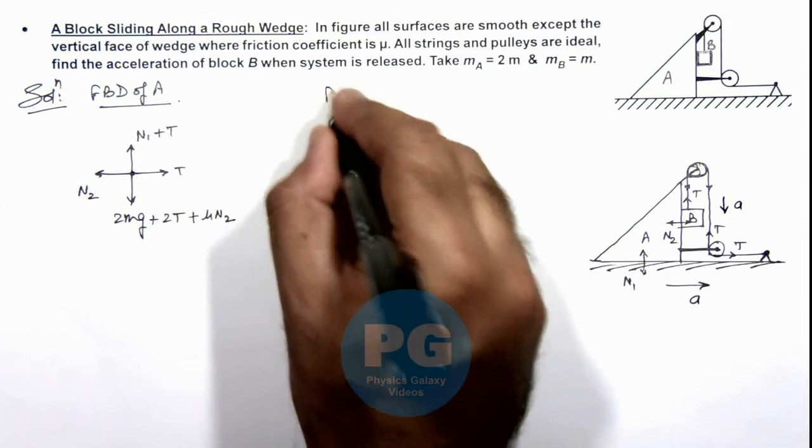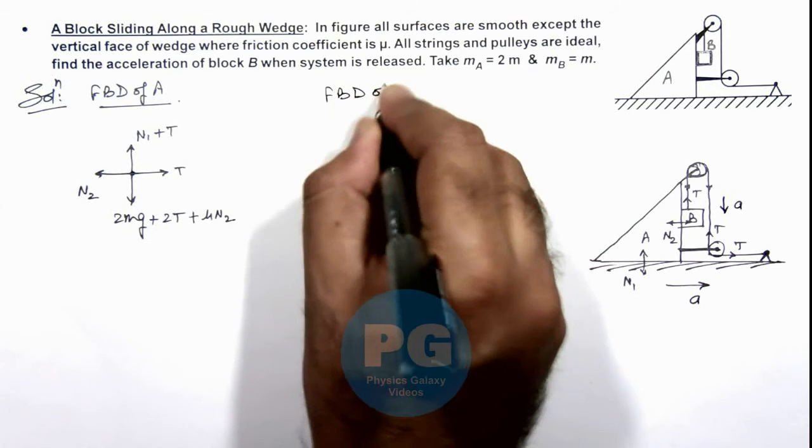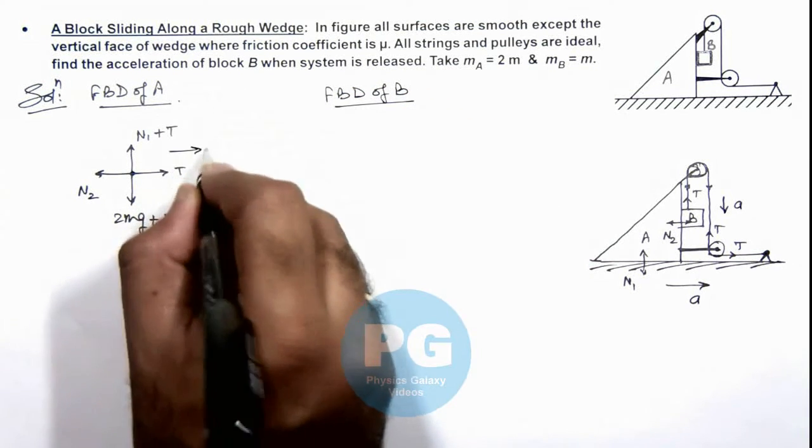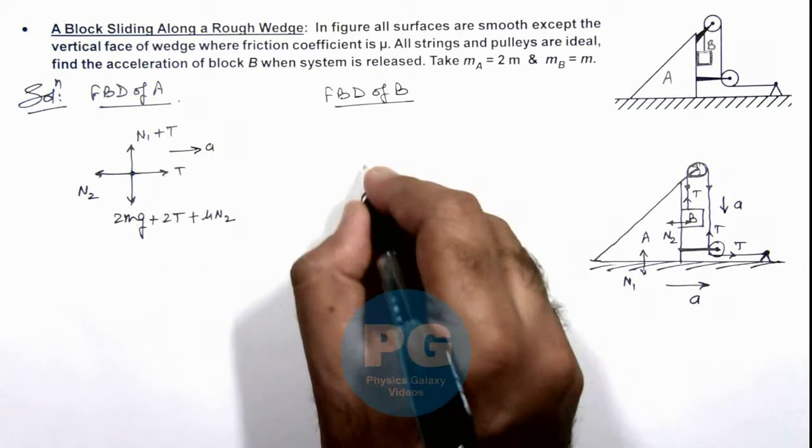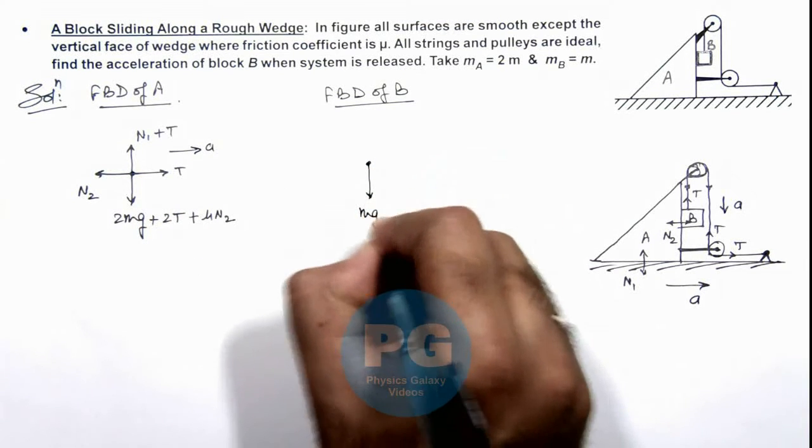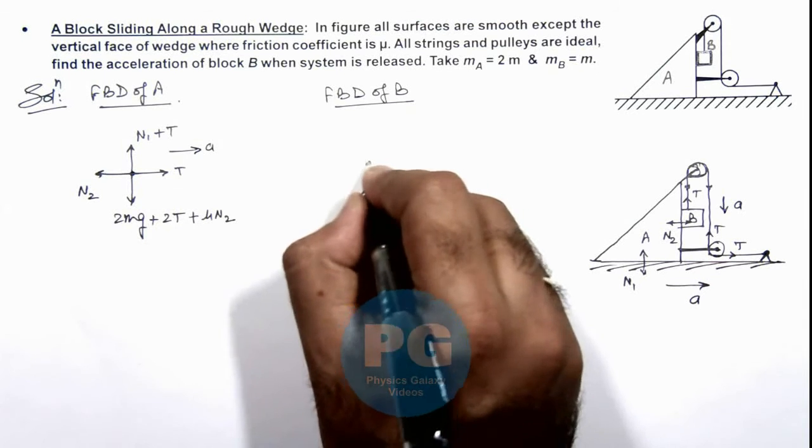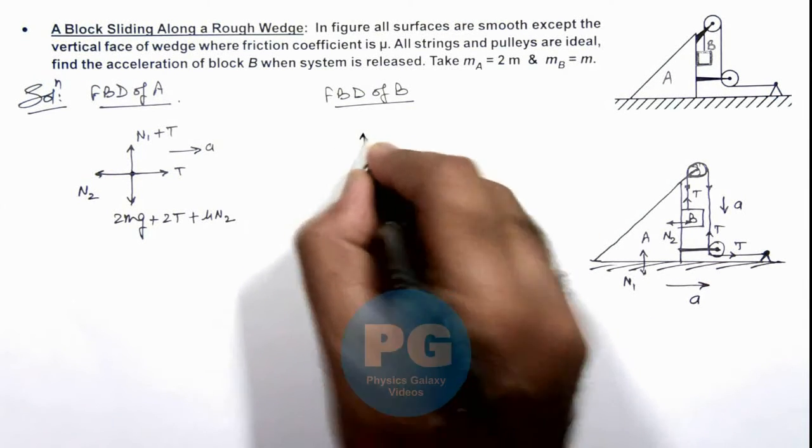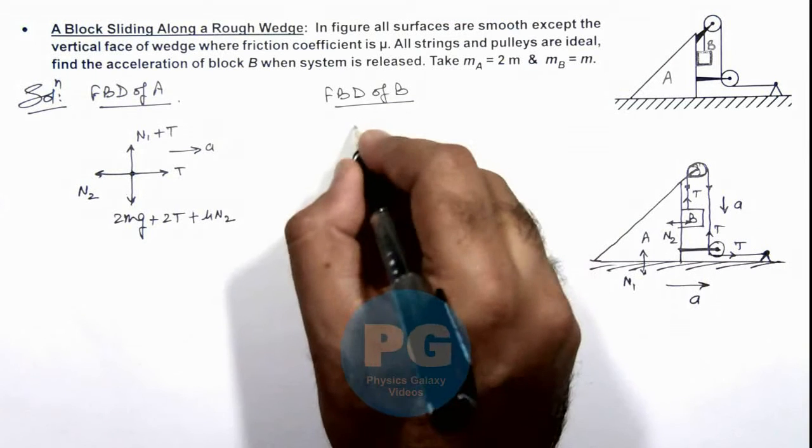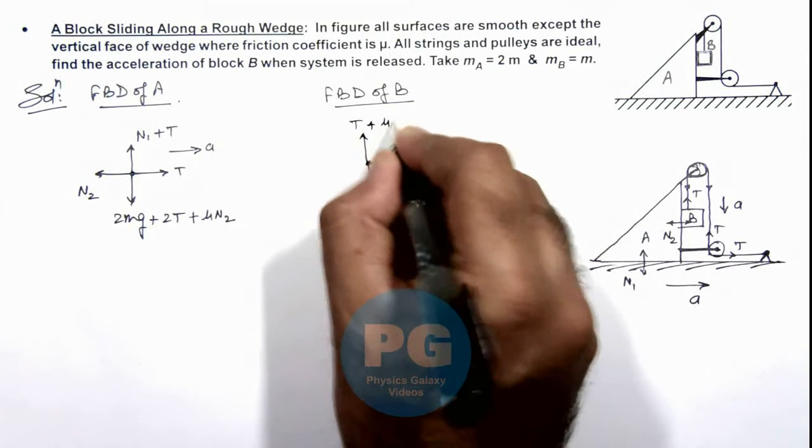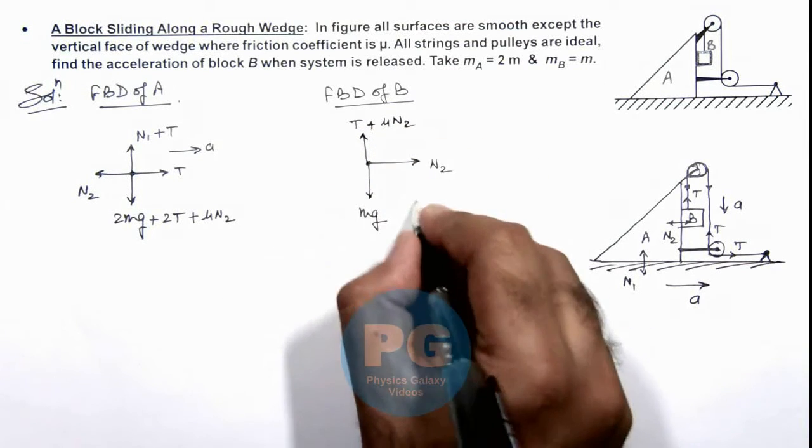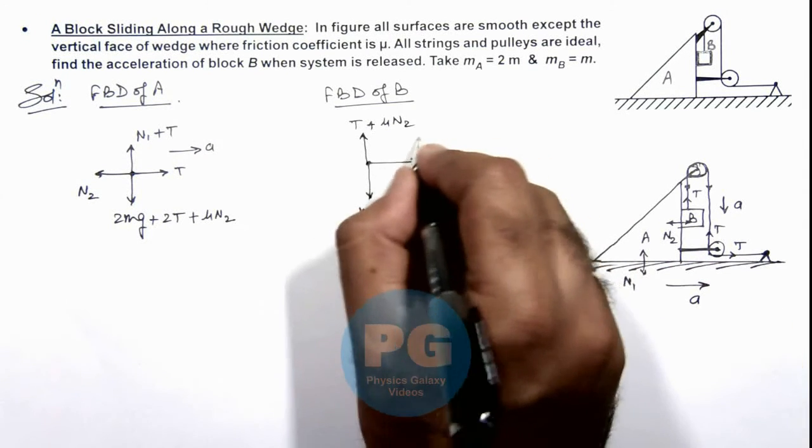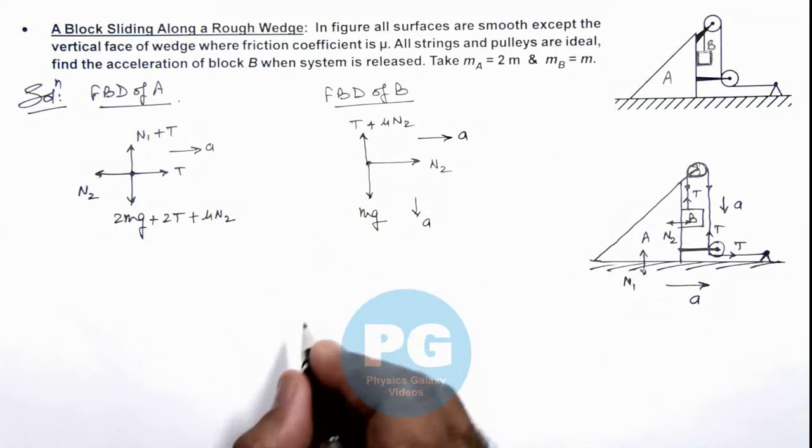So here if we draw the free body diagram of B. In A, I can draw the acceleration direction which is toward right. For B, its weight mg is acting in downward direction. Toward right it is experiencing the normal reaction N₂, and in upward direction the forces are tension and friction, that is μN₂. It is going down with acceleration a, as well as along with block A, B is going toward right with the same acceleration a.